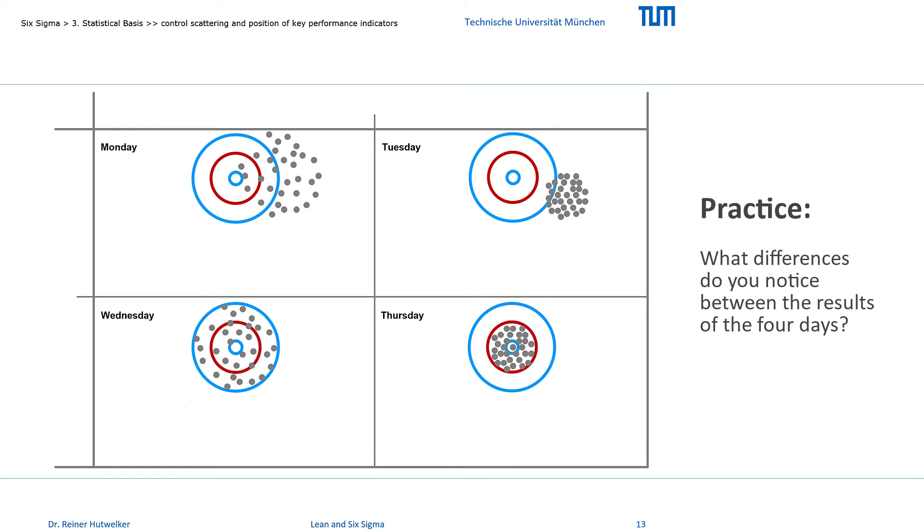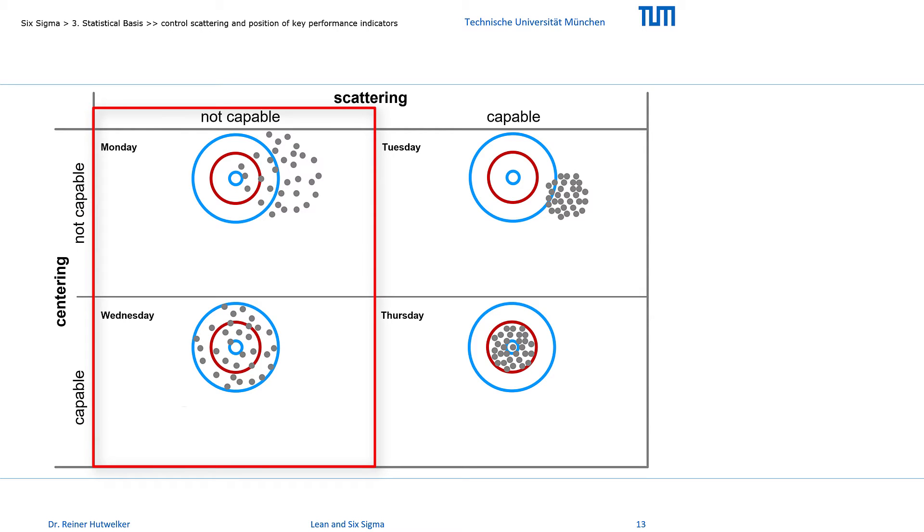What differences do you notice between the results of the 4 days? The results in columns on Monday and Wednesday differ from the results on Tuesday and Thursday in the degree of their scattering. And the results in rows on Monday and Thursday differ from the results on Wednesday and Thursday in the degree of their position centering.